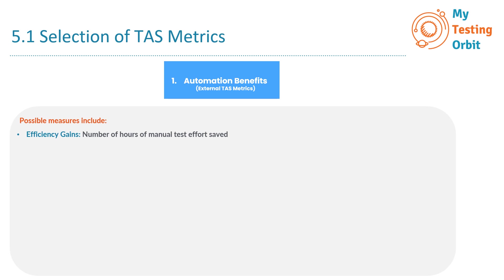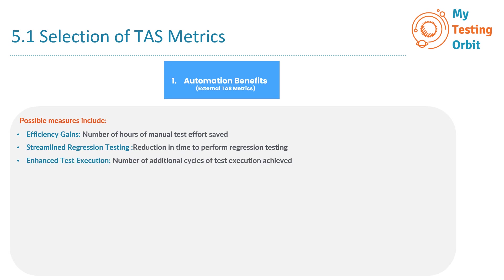Possible measures include: efficiency gains — the number of hours of manual test effort saved by automating tests compared to manual testing; streamlined regression testing — reduction in time to perform regression testing, highlighting how much faster regression testing becomes with automation; enhanced test execution — the number of additional cycles of test execution achieved, tracking how many additional testing cycles you can execute thanks to automation; and expanded testing scope — the number or percentage of additional tests executed due to automation.